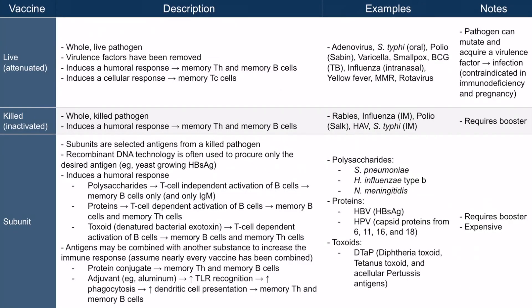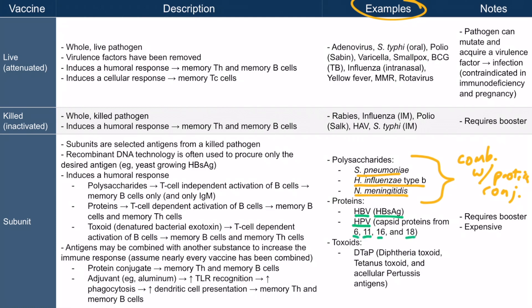There are several examples of subunit vaccines — assume nearly every vaccine has been combined with a protein conjugate or adjuvant. Strep pneumoniae, Haemophilus influenzae type B, and Neisseria meningitidis are all encapsulated organisms, so developing immunity against capsular polysaccharides is imperative, and each polysaccharide in these vaccines is combined with a protein conjugate. The hepatitis B vaccine includes the surface antigen, which is a protein, and the HPV vaccine includes capsid proteins from several serotypes including HPV 6, 11, 16, and 18 — most of these vaccines are also combined with an adjuvant to maximize immune response.